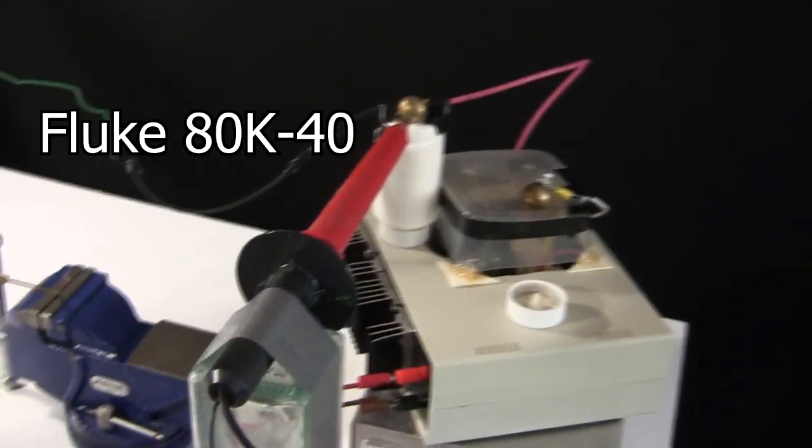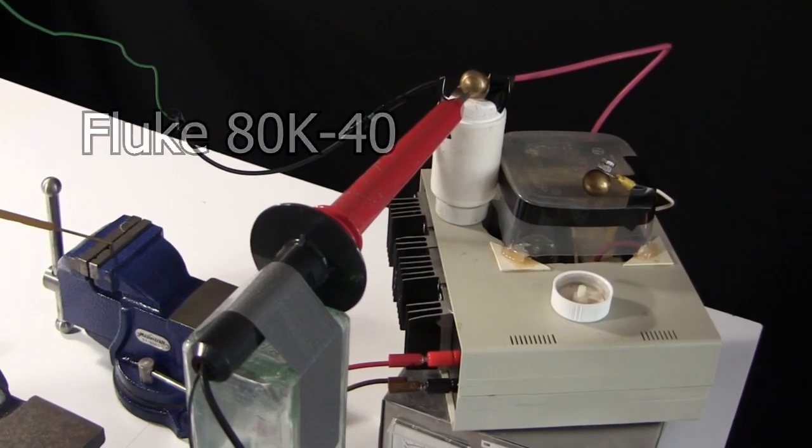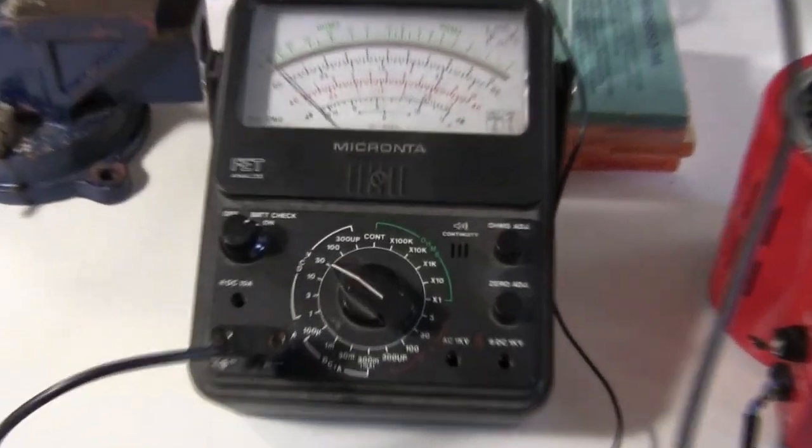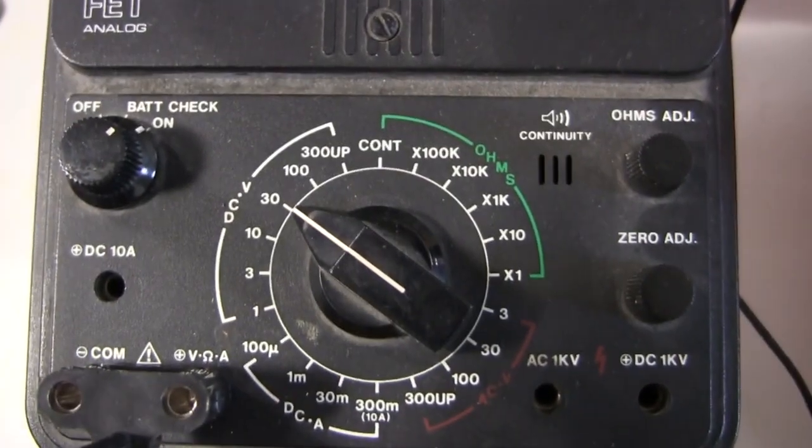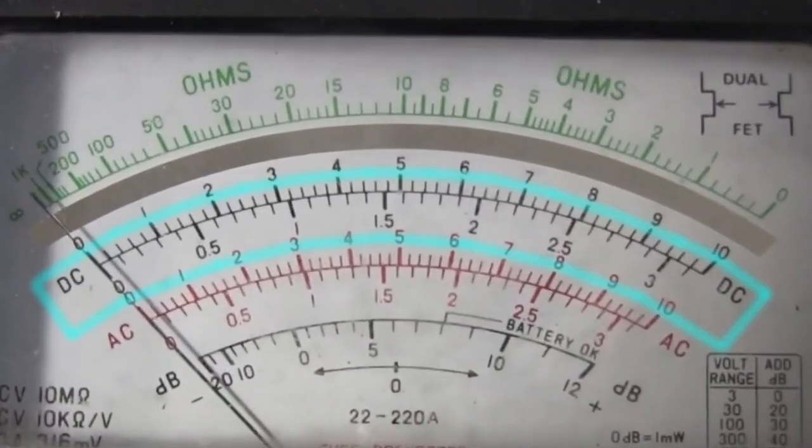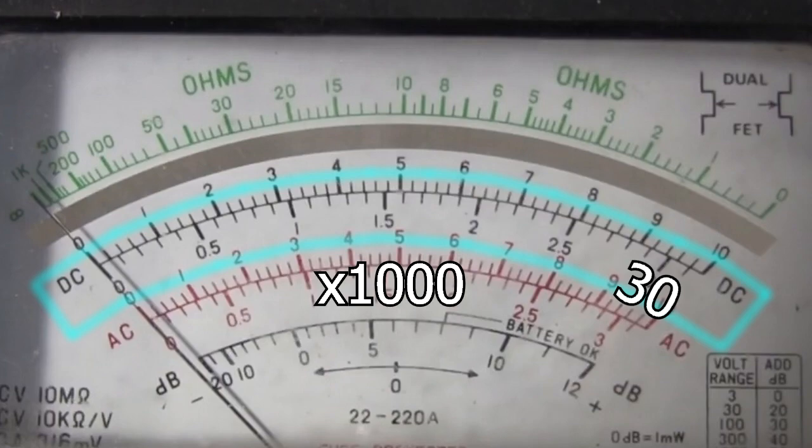To measure the voltage I'm using my Fluke 80K-40 high voltage probe. The output goes to this meter. I have it on the 30 volt DC scale and we're looking at this scale with a 3 at the end. That 3 is actually 30 and we multiply the value we get by 1000.